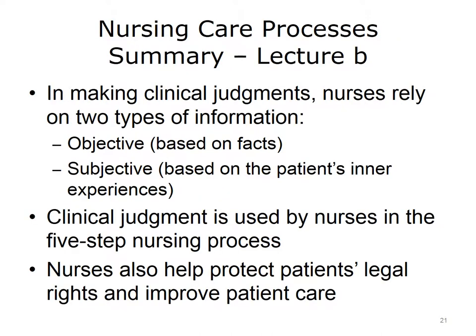This concludes Lecture B of Nursing Care Processes. In summary, nurses use clinical judgment to make the best decisions about patient care. Clinical judgment takes into account both facts, such as a patient's blood pressure and pulse, and more subjective information, such as a patient's coping skills or cultural needs. Nurses use their clinical judgment skills when following the five-step nursing process for treating patients. The nursing process includes assessing the patient, diagnosing the problem, creating a plan of care, implementing the plan of care, and evaluating the plan of care. Along with providing patient care, nurses can play important roles in protecting patients' legal rights and improving patient care.